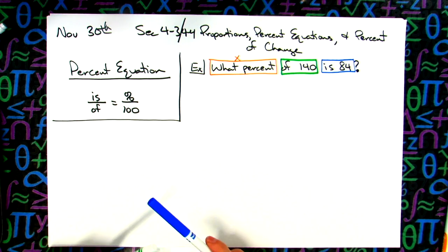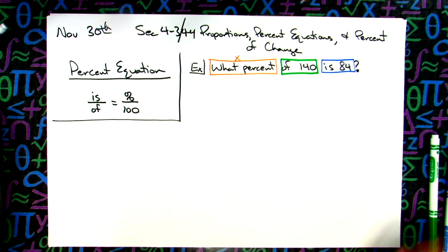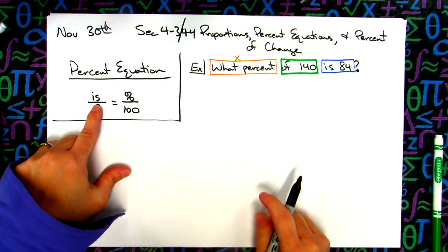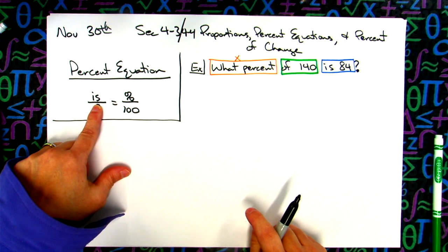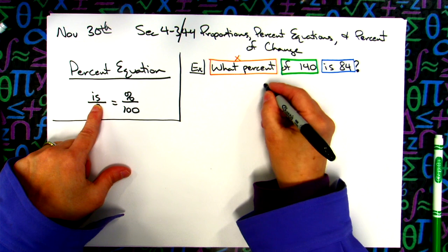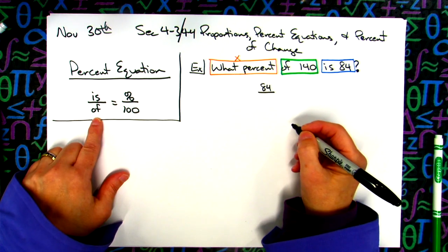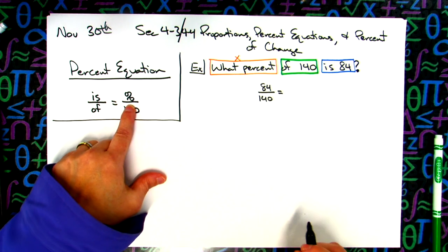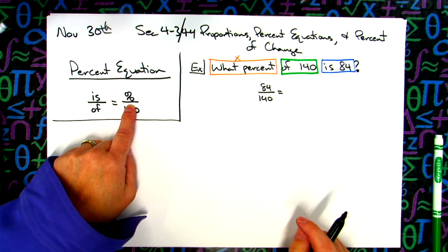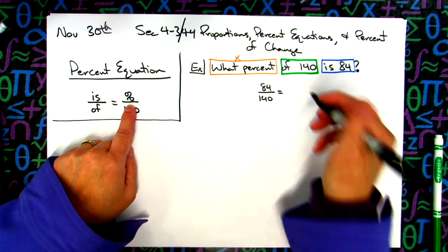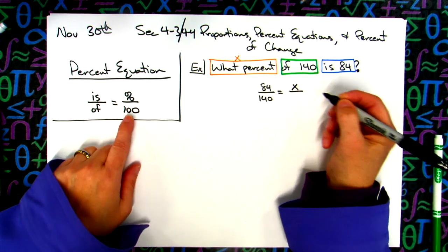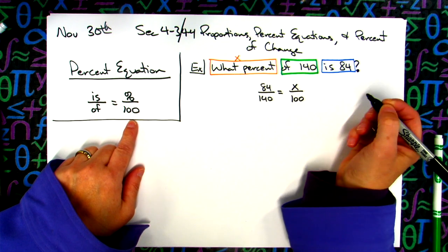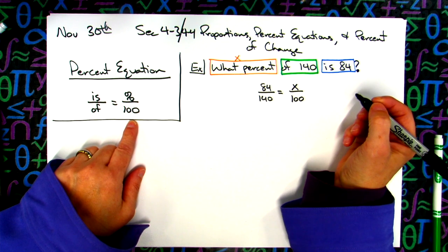Now we're going to write a proportion and cross multiply down and solve. I'm going to look at this proportion and fill in all my numbers. 84 goes in the top left hand corner. 140 is the of number. Did they give me the percent in the question? No, that's what I'm trying to solve, so I'm going to put an x in for my percent. The formula says there is a 100 in the bottom right hand corner all the time, every time.